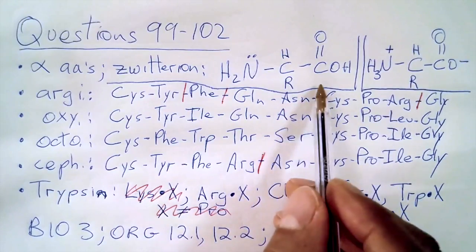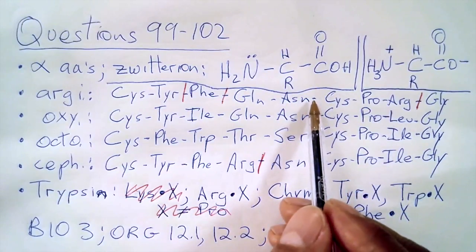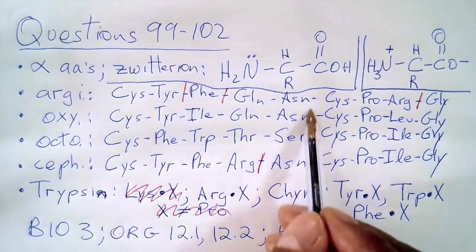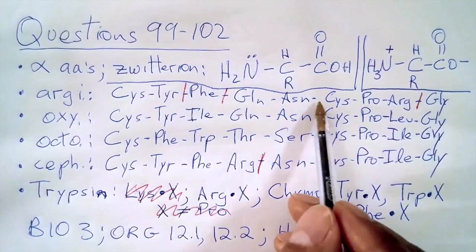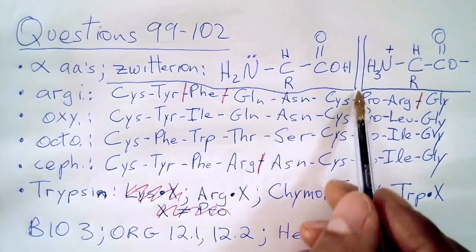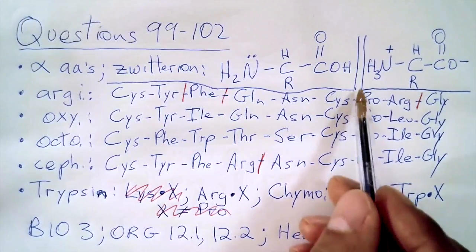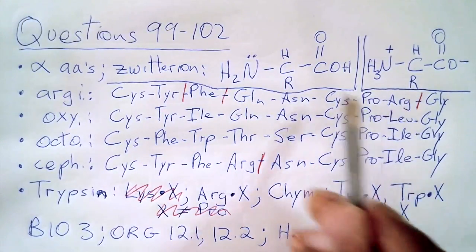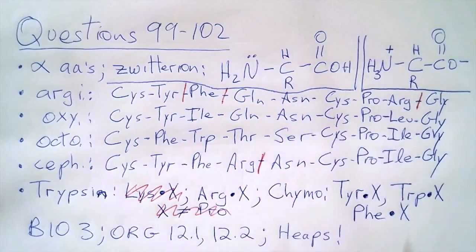We can do that by cutting here on the right side of Asn, which is asparagine. That would create a dipeptide and a tripeptide. Or we can cut right here on the right side of cysteine, and that would create a tripeptide and a dipeptide. The right side, of course, I mean the carboxyl side. And so 102, the answer is B. Of course, asparagine wasn't an option.